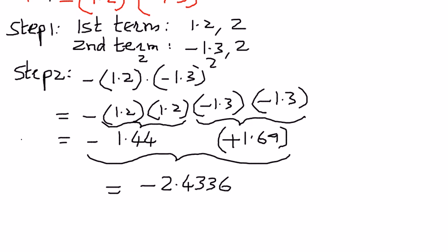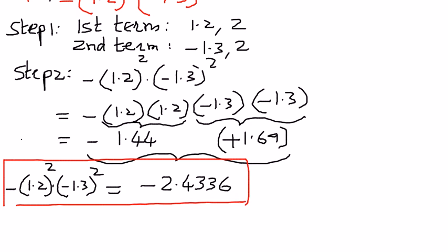Therefore, when we have negative 1.2 raised to the power of 2 times negative 1.3 raised to the power of 2, the answer came out as negative 2.4336. In this presentation, we have seen that when we have exponents containing multiple decimal numbers, we break it down into steps and simplify the math to arrive at the final answer. In the next presentation, we shall see how to simplify exponents containing mixed fractions. Thank you.